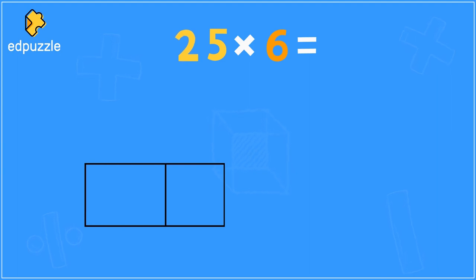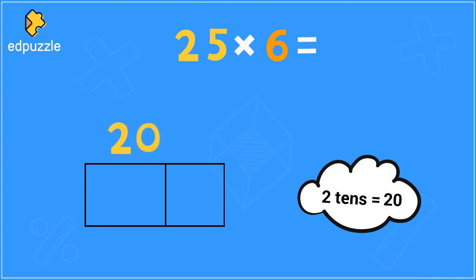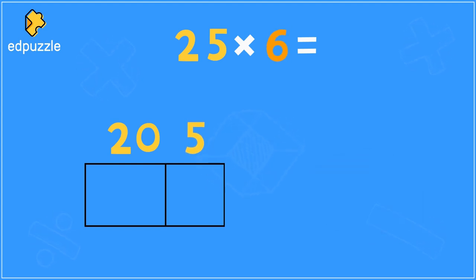We can first look at this 2, which I know represents two tens, and therefore it has a value of 20. Next we can look at this 5, which represents five ones, or just a value of 5. Now we're multiplying all of this by 6, so we will put the 6 on the side of the area model.